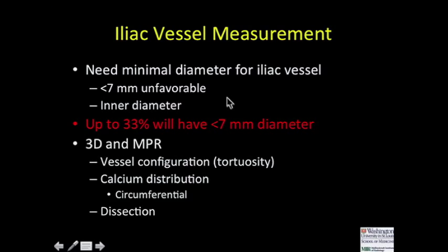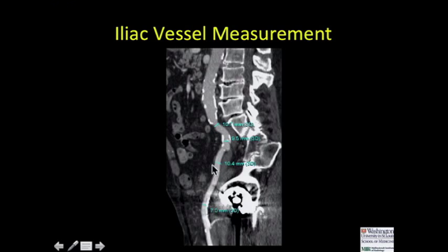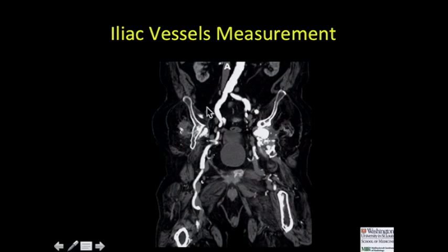Moving on to the iliac vessels — another important structure — we want to know the inner diameter of the vessel, not the outer wall, but inner wall to inner wall or calcium to calcium, ideally 7 millimeters or greater. We provide distributions of calcium and vessel configuration, noting tortuosity. We draw a center line through the aorta and right and left vessels for a curved MPR, taking measurements at the narrowest portions of the common iliac, internal and external iliac, and femoral vessels. The more tortuous and calcified, the more likely a femoral approach may not be ideal.